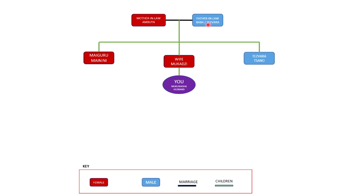Now going to your wife's siblings. If your wife's sibling is a male — which means it's your wife's brother — you're going to address him as Tejara or Tzano.